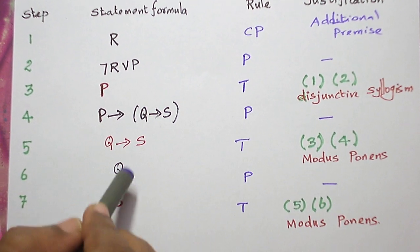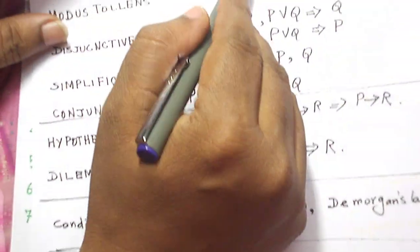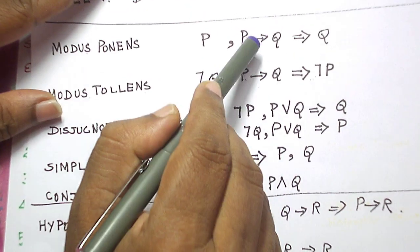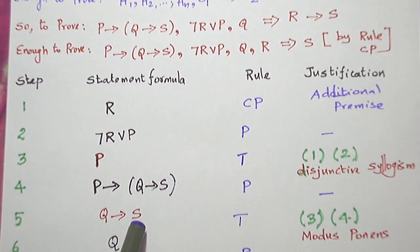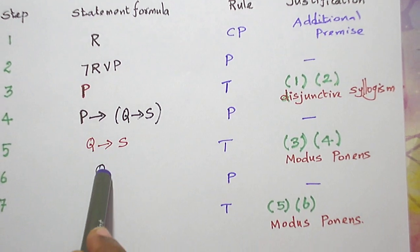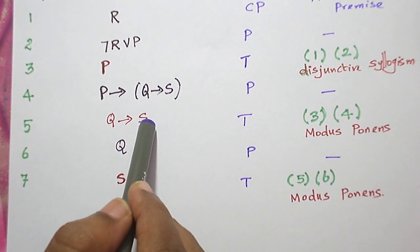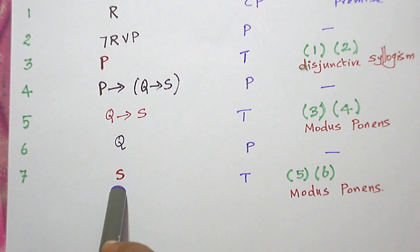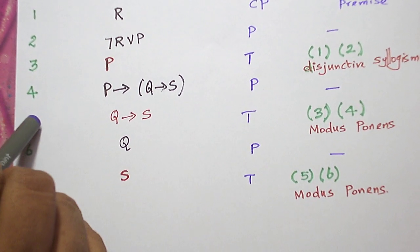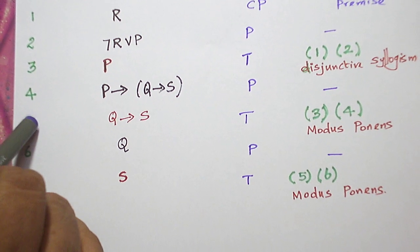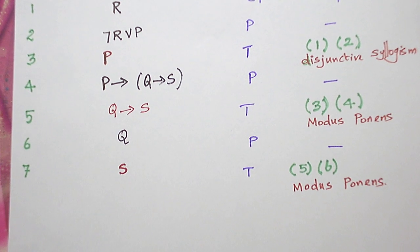When I combine these two statement formulas, since we have a conditional connective we use modus ponens. We have Q conditional S, and Q is the left hand side, so we apply modus ponens and get the right hand side S. S is the formula derived using rule T by combining statement formulas in steps five and six using modus ponens. This completes the proof for the original problem.